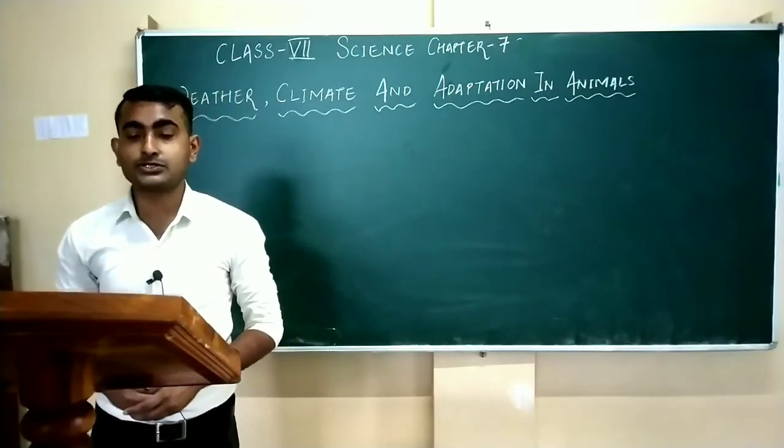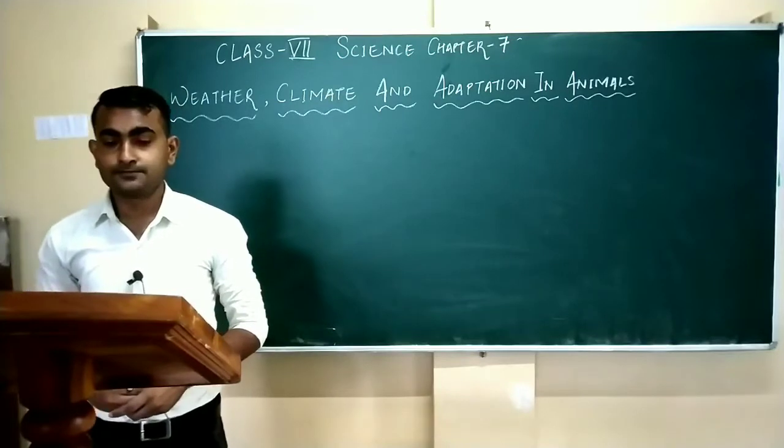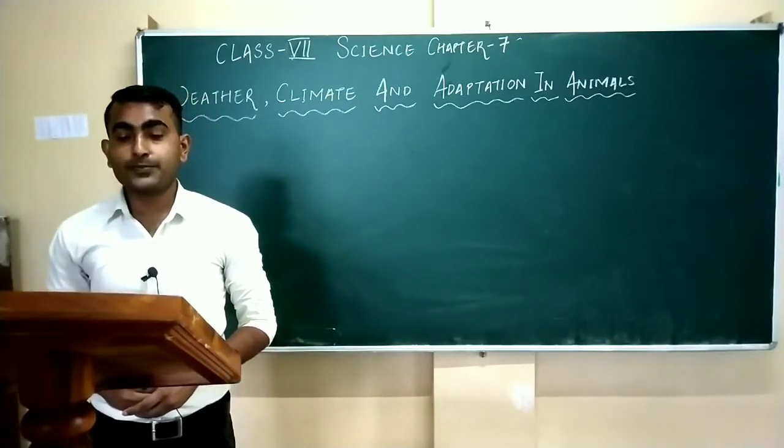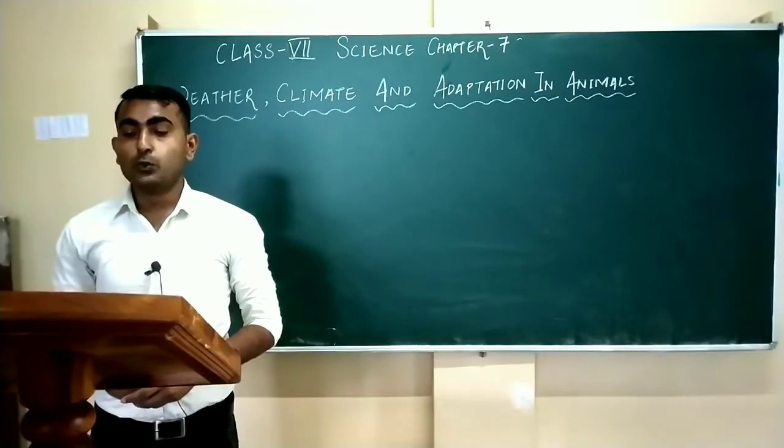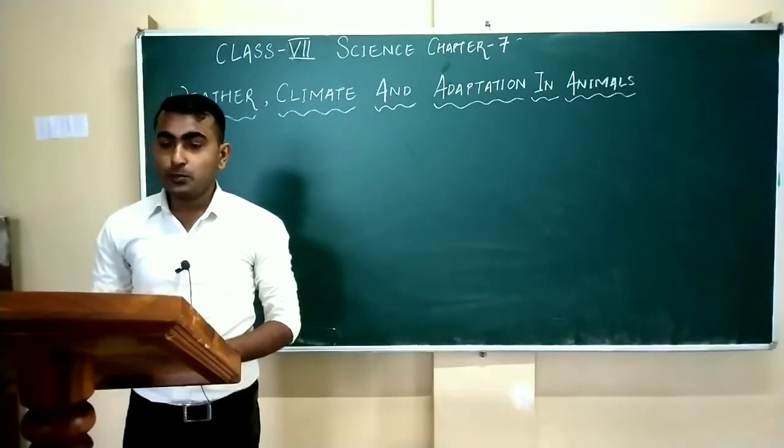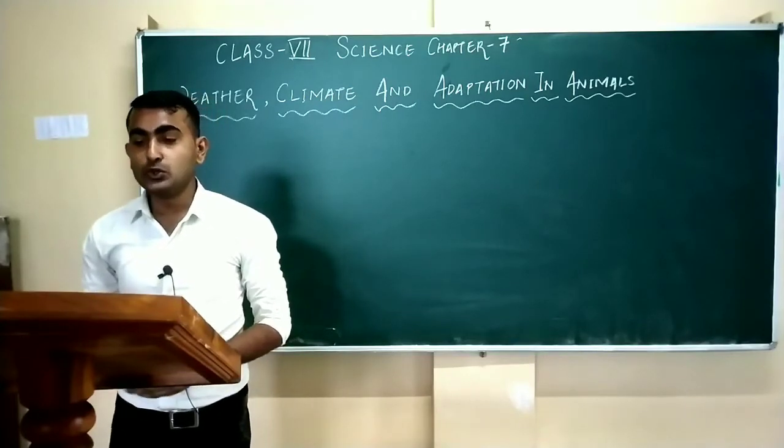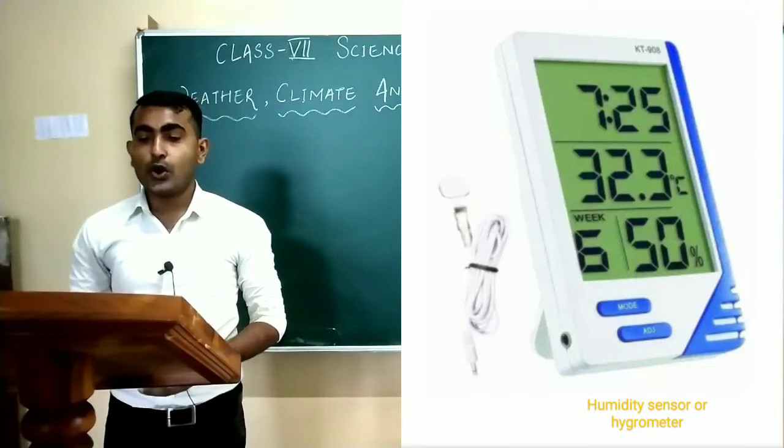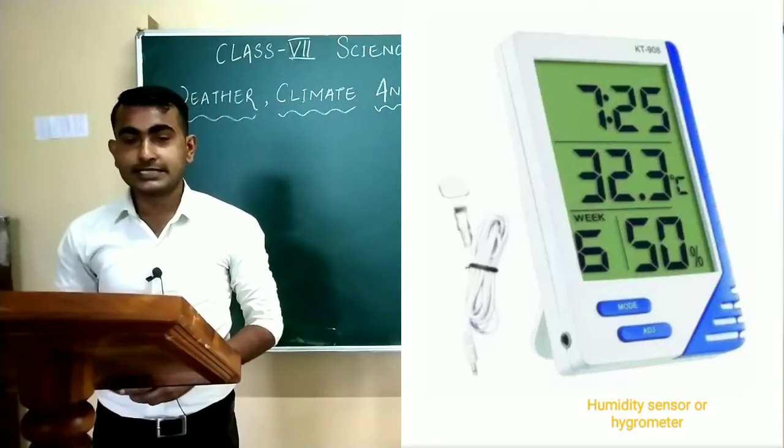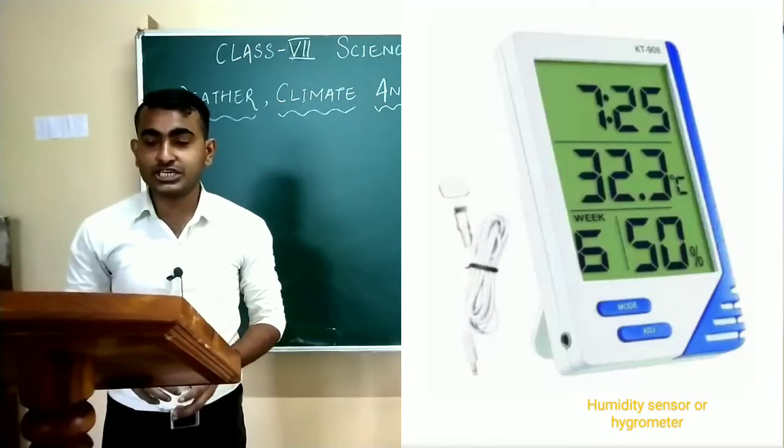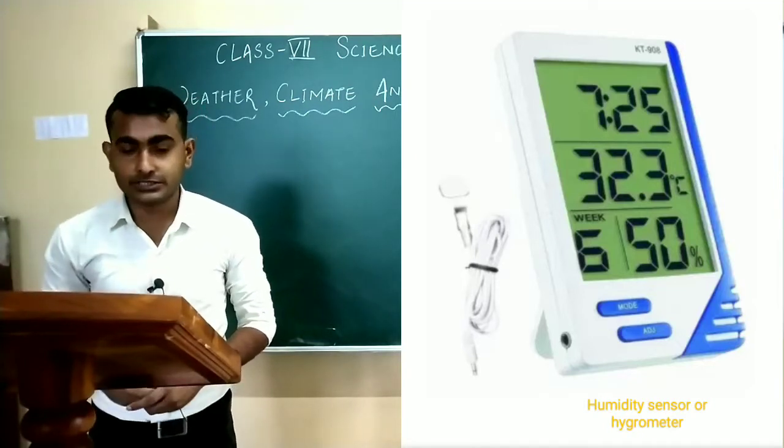Let's understand how to measure these different elements of weather. As we know, to measure temperature of a substance we use a thermometer. Similarly, to measure humidity we use a humidity sensor. A humidity sensor or hygrometer measures and reports both moisture and air temperature.